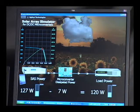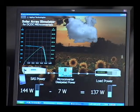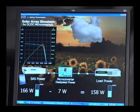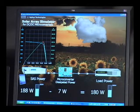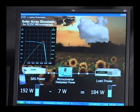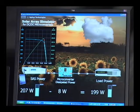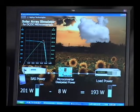So as I increase the sunlight here again, the IV curves will go up and the microconverter is able to track that maximum power point. That's what its job is.